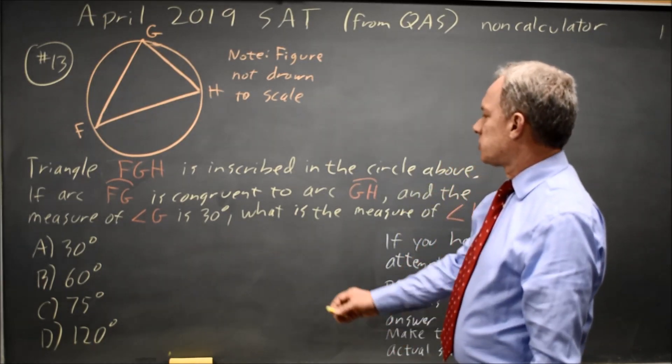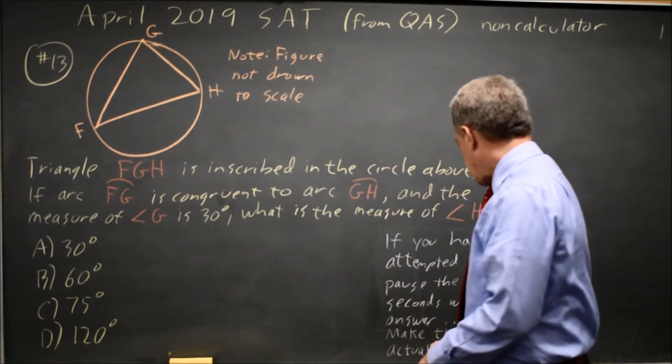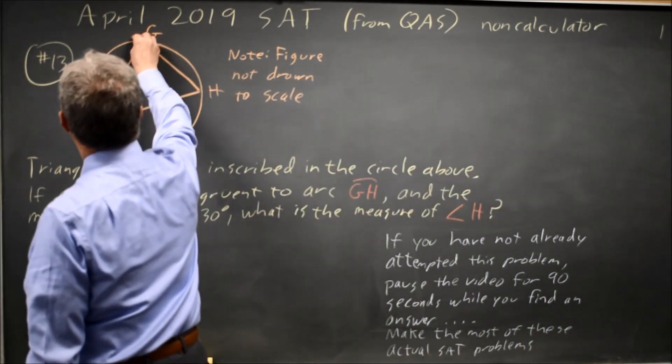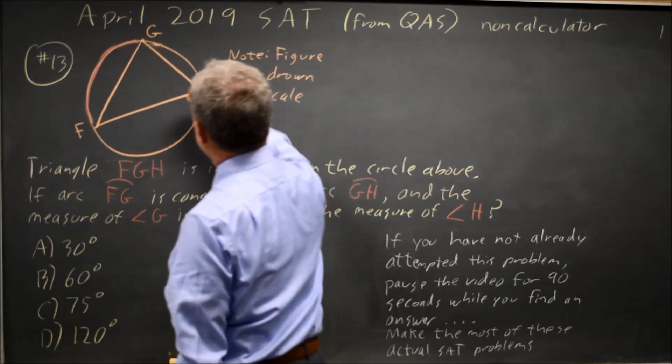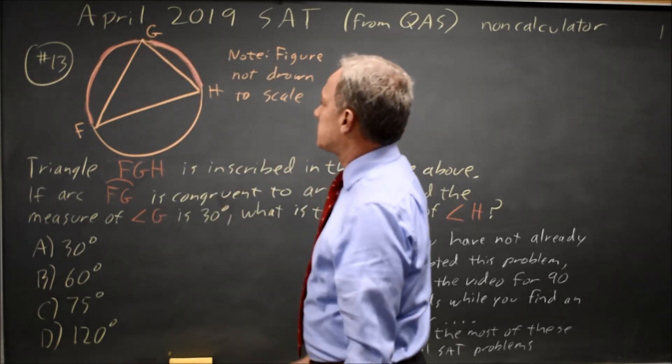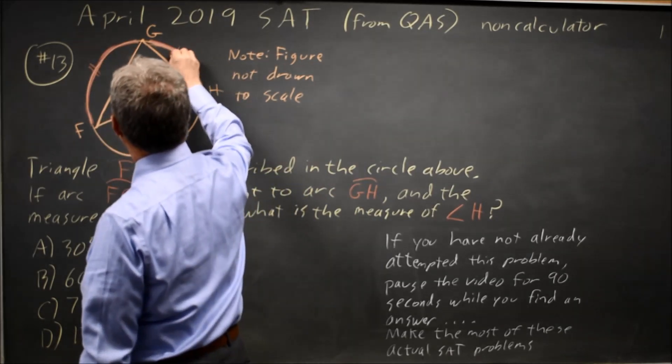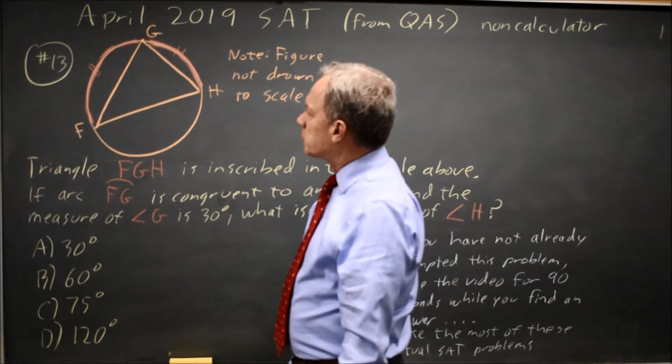In this case, we're told triangle FGH is inscribed in the circle. If arc FG, that's this, is congruent to arc GH, that's this. They told us the figure is not to scale and it's clearly not to scale in my sketch or in the graphic that College Board provides.